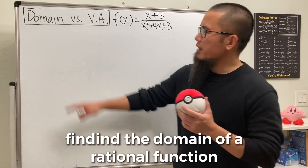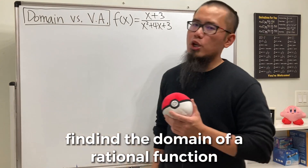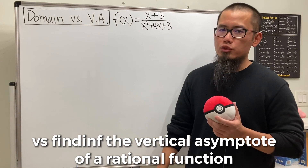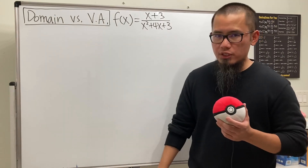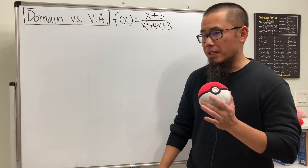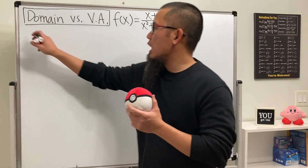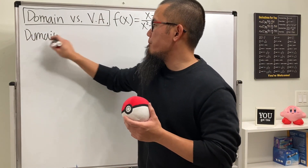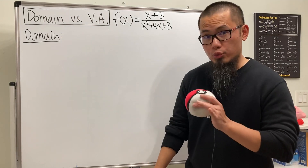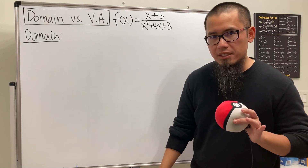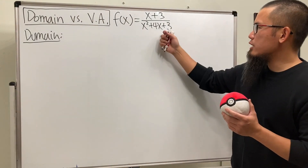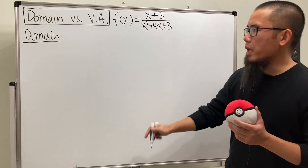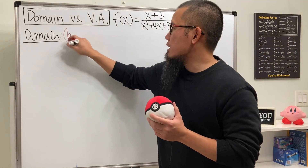Let's talk about the difference between finding the domain of a rational function versus finding the vertical asymptote of a rational function. This is the rational function we'll work on. First, when we want to find the domain of a rational function, the key thing to remember is do not reduce anything. Some of you might notice that this is reducible, but don't do it for the domain.